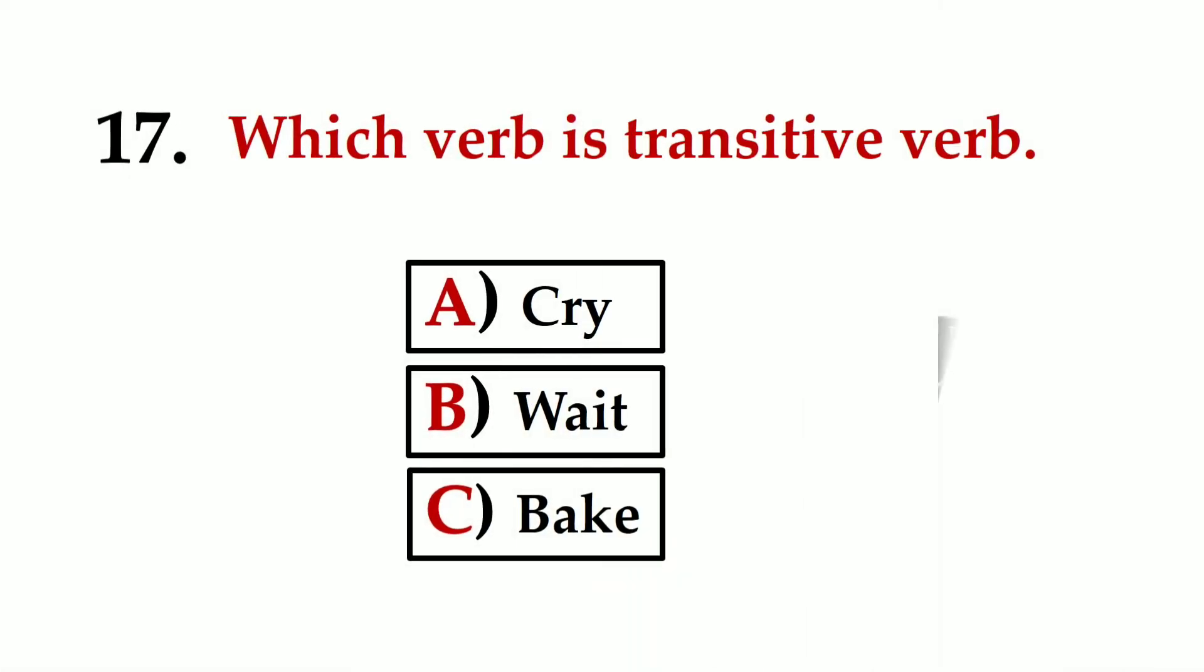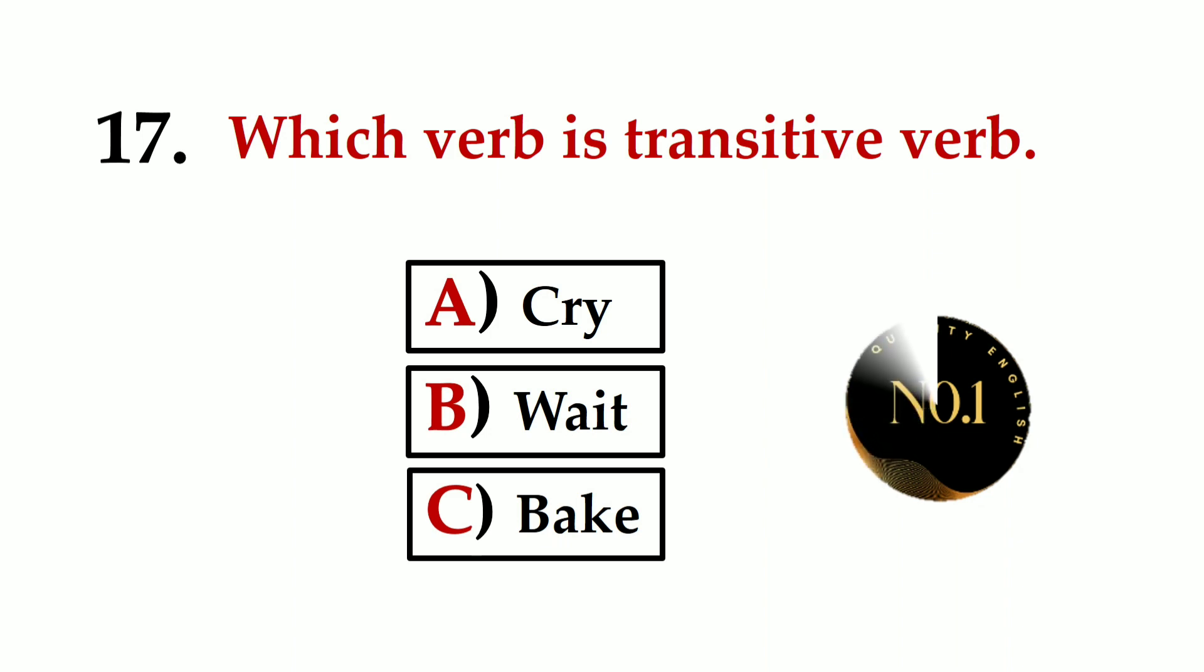Number seventeen: Which verb is transitive verb? A) cry, B) read, C) back. The transitive verb is that verb which contains an object in the sentence, so the verb which is transitive is C) back.